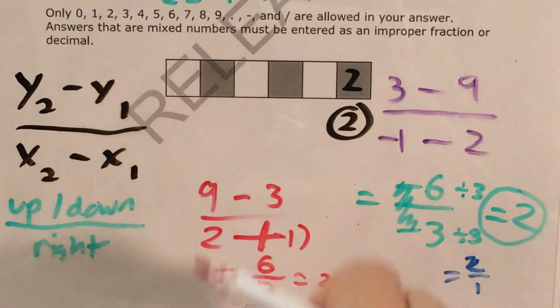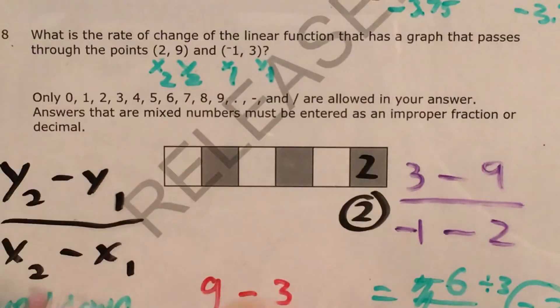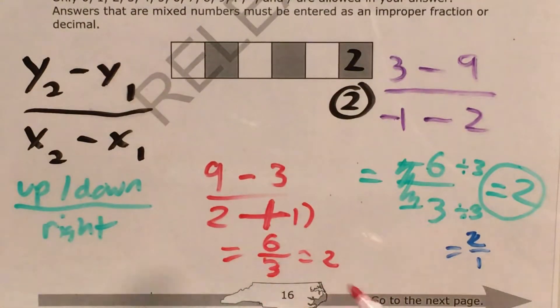The point of all this was even if our points were switched around we could still get the same slope, because we could still use the same directions of going 2 up and 1 right to get from one point to the other.